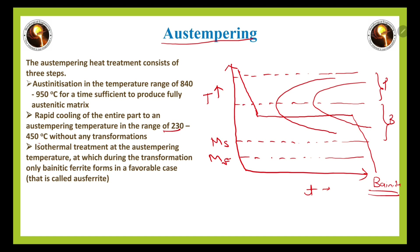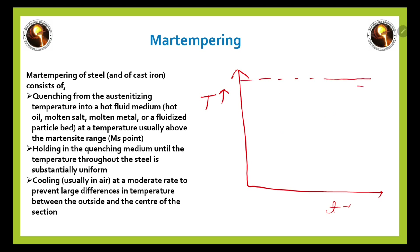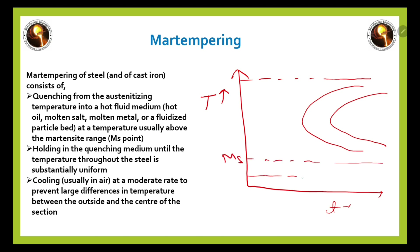Now we come to the martempering process. Again, we use a TTT diagram with temperature on the y-axis and time on the x-axis, showing the transformation temperature, the Martensitic Start (Ms) temperature, and the Martensitic Finish (Mf) temperature.